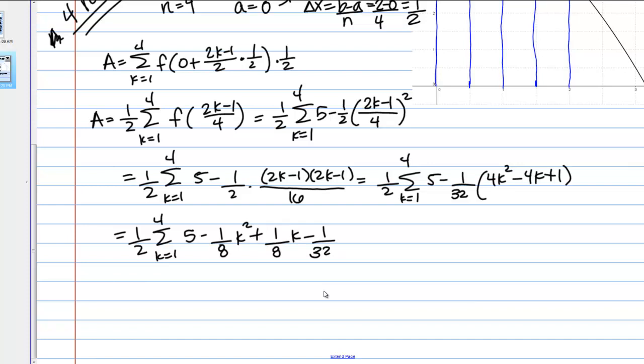I'm only doing 4 rectangles here, so really I could just plug in k equals 1, 2, 3, 4, and add them together, but let's practice using the sum formulas because if you're doing a larger number of rectangles like 400 like I did in the other videos, then you're definitely not going to want to add all those up by hand. We want to be able to use the sum formulas correctly. Actually, first of all, one more thing I can do here to simplify this is do 5 minus 1 over 32, and that ends up being 159 over 32. I have that, and then my minus 1/8 k squared plus 1/8 k.